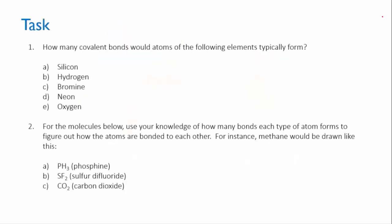For your task for this video, I'd like you to look at these 5 elements here and determine how many covalent bonds you would expect the atoms to typically form. And then in question 2, I'd like you to use your knowledge of how many bonds each of the atom types form, and then use that to figure out what the molecule might look like, how the atoms get joined together with bonds.